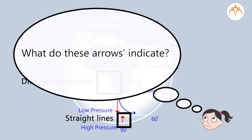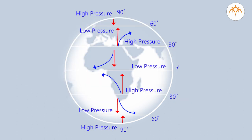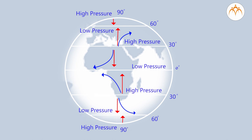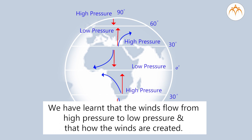What do these arrows indicate? The direction of these arrows shows the direction in which the winds are flowing or moving. We have learnt that winds flow from high pressure to low pressure, and that is how the winds are created.